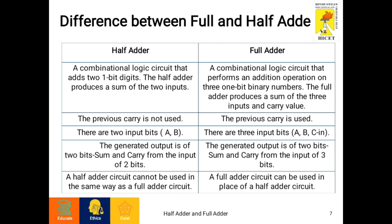There are 2 input bits, A and B, in a half adder, whereas in a full adder there are 3 input bits: A, B, and C in. Since only 2 bits are used in a half adder as input, the generated output is a 2-bit sum and carry from the input of 2 bits.